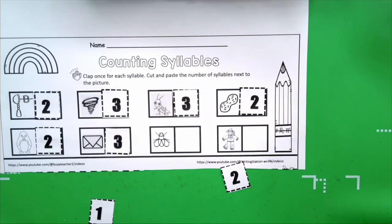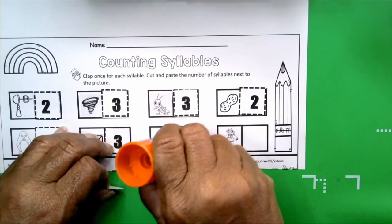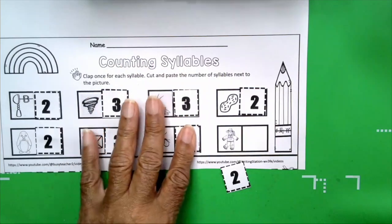Okay. Boys and girls, we are doing great. I know you're doing a wonderful job. Very good. Our next picture is fly. Fly. Get your hands ready. Fly. How many claps? One. How many syllables? One. Very good.